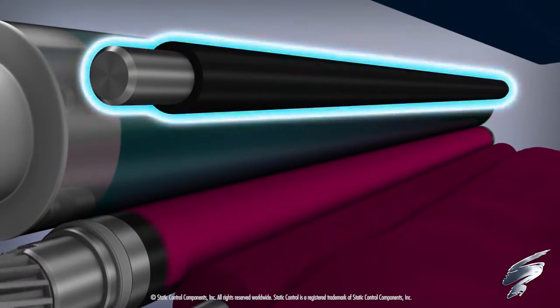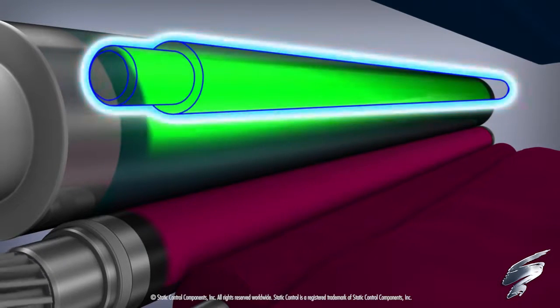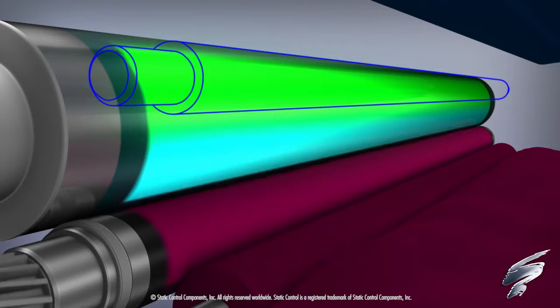The primary charge roller, or PCR, rotates next to the OPC drum and applies a negative charge to the surface of the OPC drum, which prepares it for the imaging process.